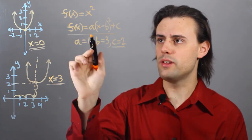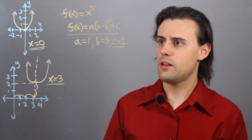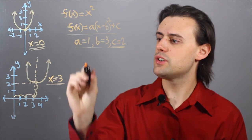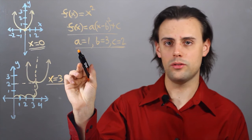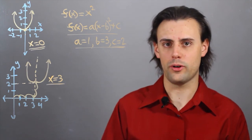So this is sometimes called the standard form, and the position of the vertex and the axis of symmetry is defined via the values of these coefficients, of these parameters.